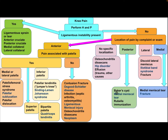If it is posterior, the differential diagnosis includes Baker cyst, medial meniscal tear, and popliteal inflammation. If it is lateral: discoid lateral meniscus, iliotibial band syndrome, and fracture. If it is medial, the differential diagnosis includes medial meniscal tear or fracture.